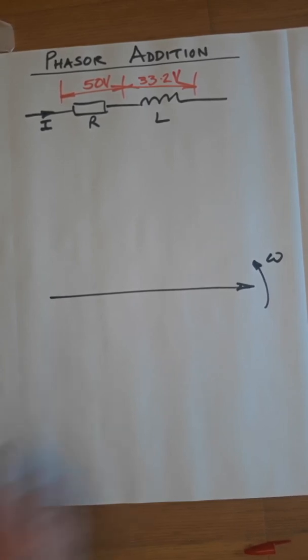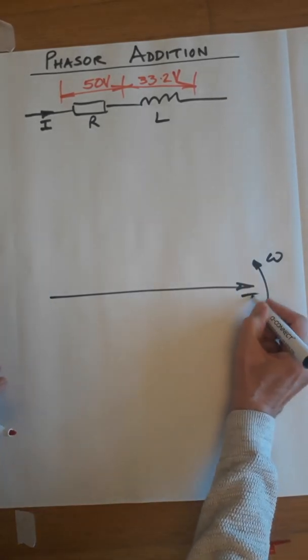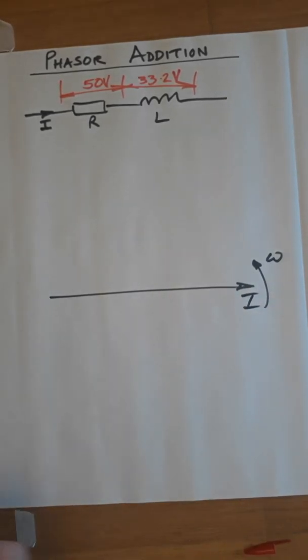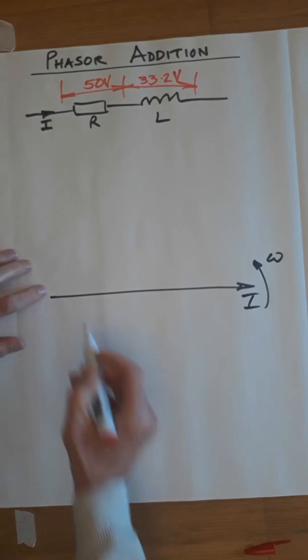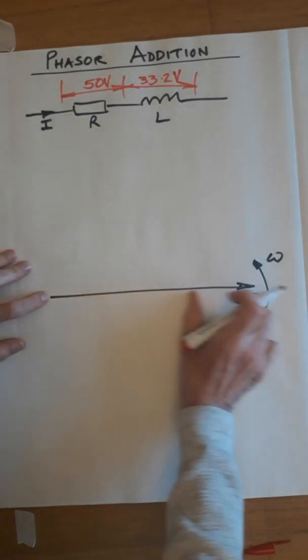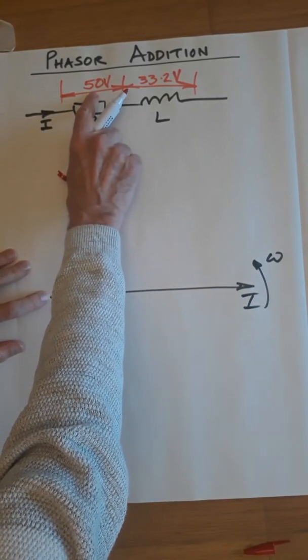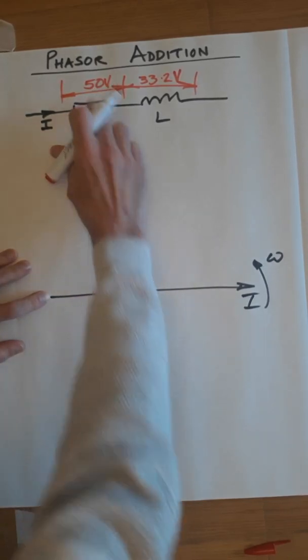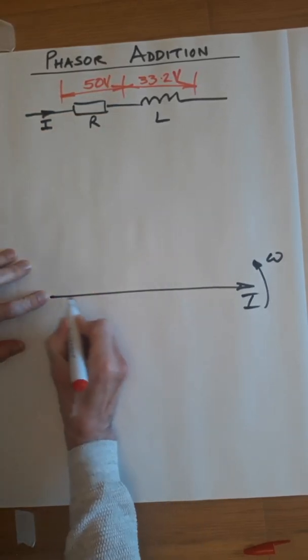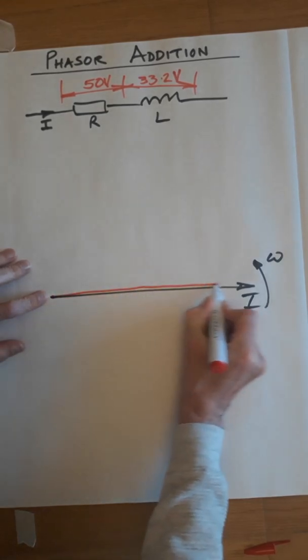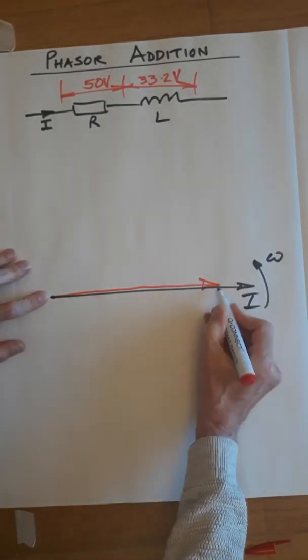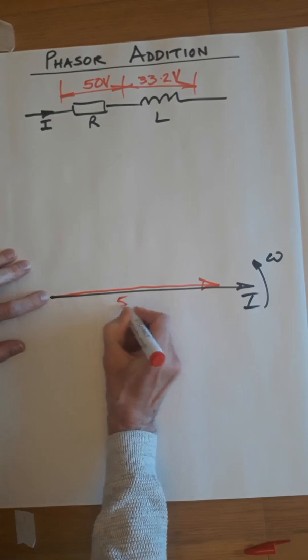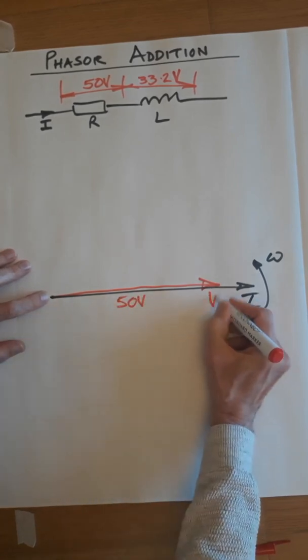So, there's the current, which is our reference, and then we're going to do the resistor voltage, which goes in phase. You will measure this, perhaps 5 cm, perhaps 25 cm, whatever you choose an appropriate scale. You're going to do this, preferably on the line, so that's going to be 50 volts VR.